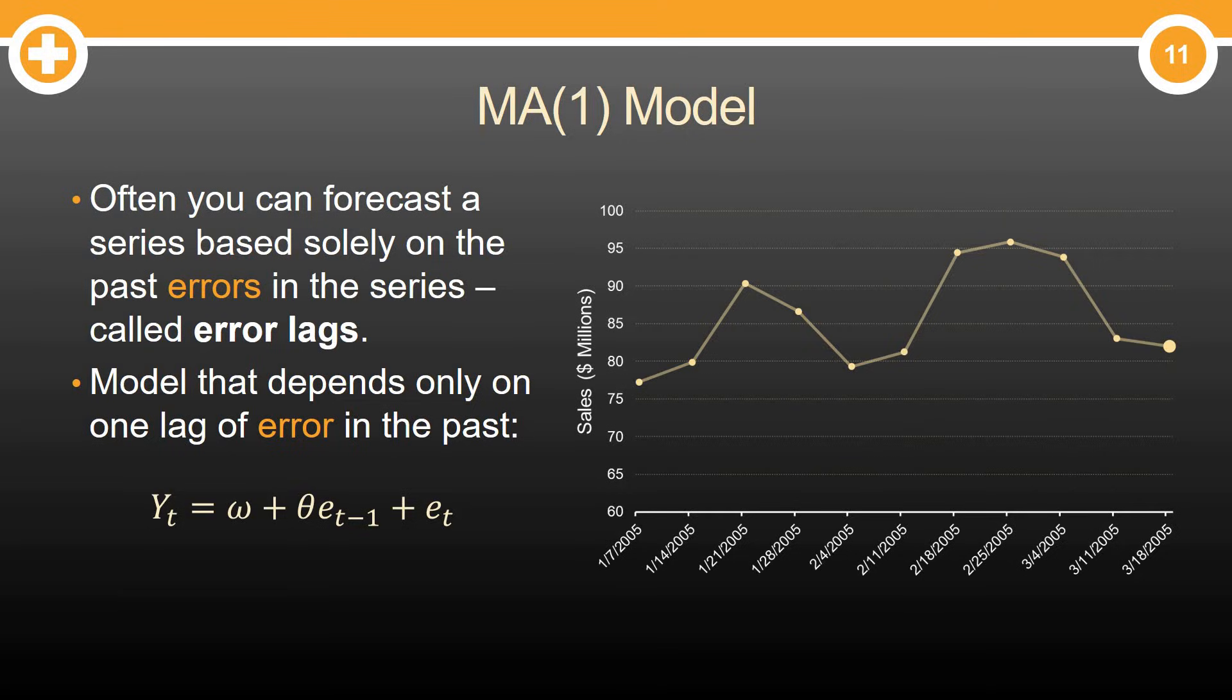In fact, a moving average 1 model, or an MA1 model, is literally just saying that the actual target variable Y depends on a previous error, the error from the time period before, plus some current error.